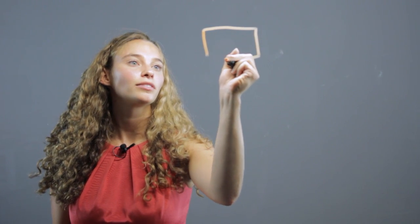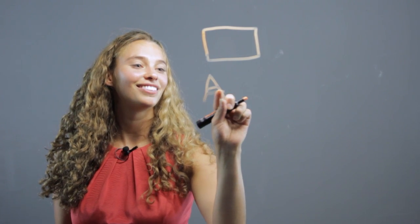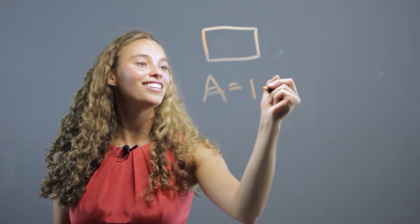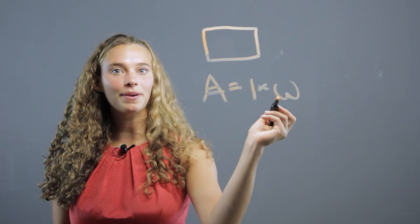Let's start off with a rectangle. It's great to have them memorize the formula. A equals L times W, length times width.